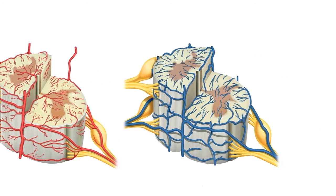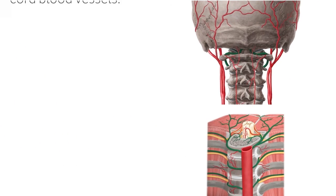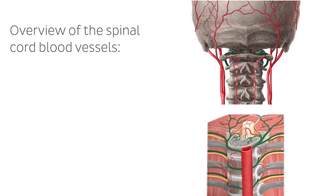So let's begin by looking at these two views of the spinal cord. The first is a posterior cervical view, while the second is a frontal view at the level of the thorax.